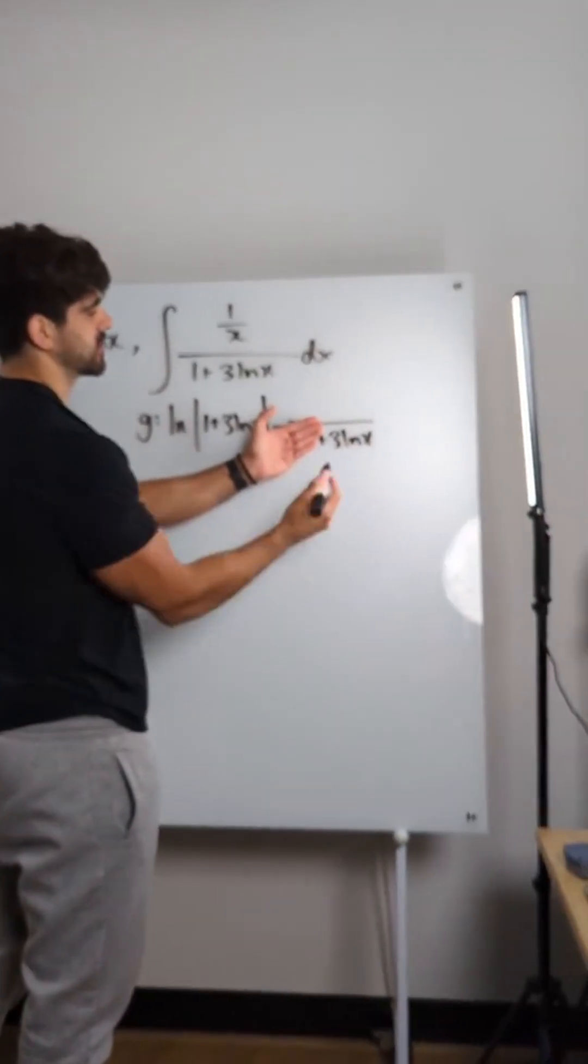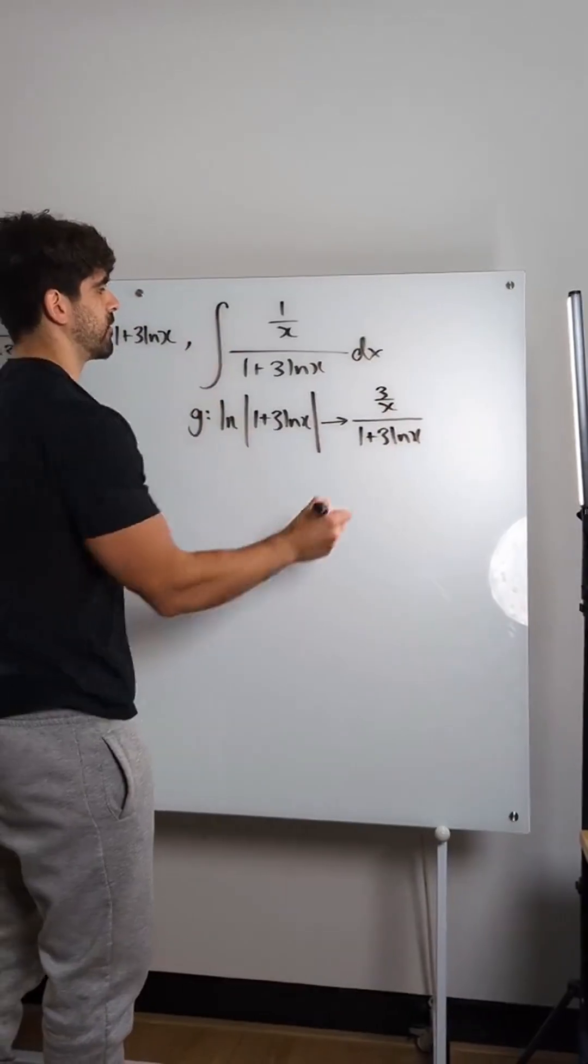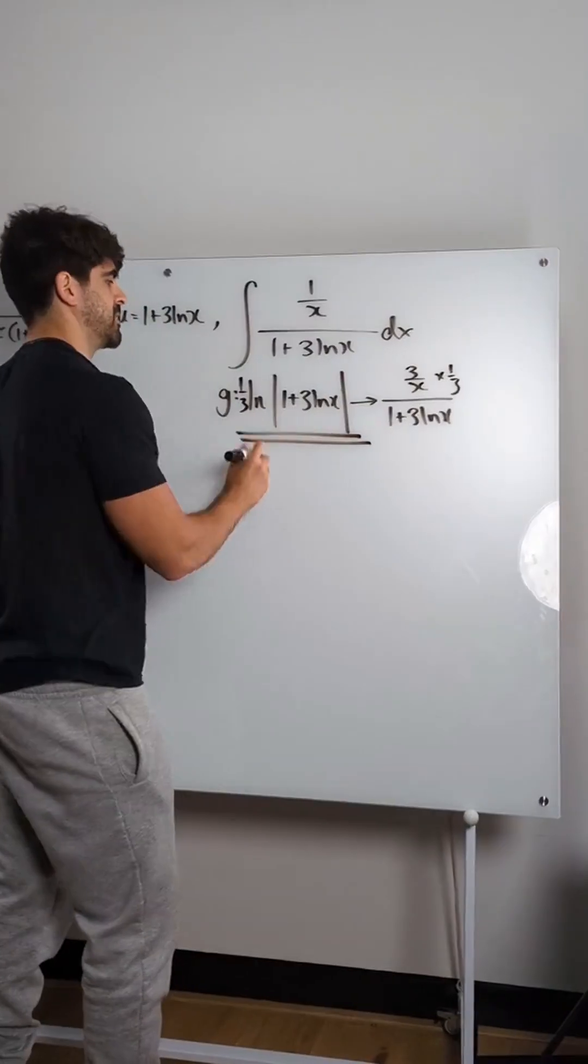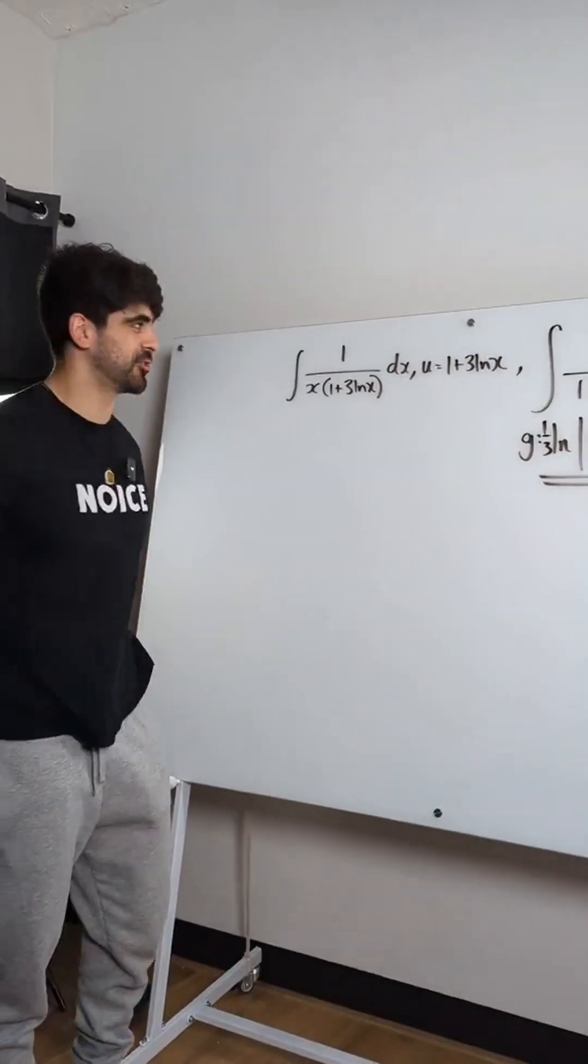times by 3. 3 over x. But we wanted 1 over x. So we're going to multiply by a third on both sides. There's your answer. Plus C. Nice and quick. How are we going to do it by substitution? I'll show you anyway.